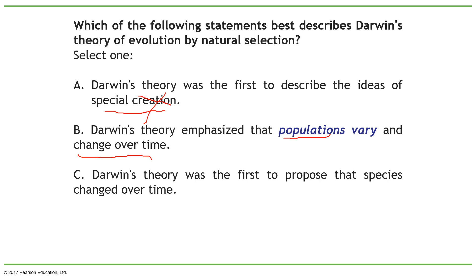Option C: Darwin's theory was the first to propose that species change over time. No — there were other people before Darwin. Lamarck was right about species changing over time, although the mechanism he proposed was wrong. So options A and C are clearly wrong.